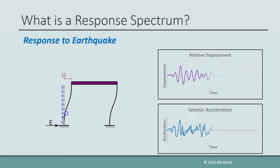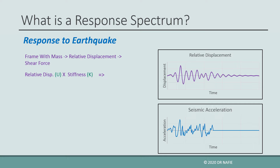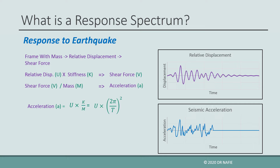Therefore, the response of the structure to earthquake is measured by the relative displacement. If we multiply the relative displacement U by the stiffness K, we obtain the shear force V, which is the force used for the design of the building. If we divide the shear force V by the mass of the building, we obtain the absolute acceleration A. In summary, if we multiply the relative displacement U by the value K over M, or equivalently by the square of the value 2π over T, we obtain the absolute acceleration, which is used to measure the response of the earthquake instead of the relative displacement.